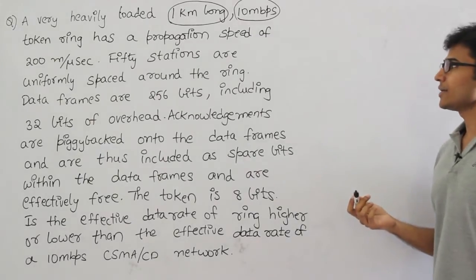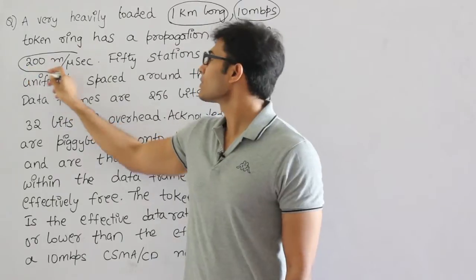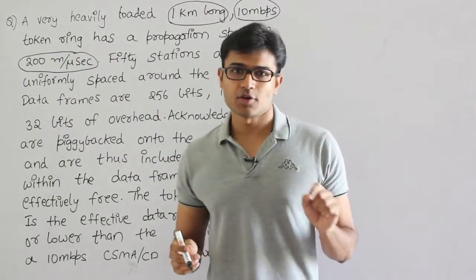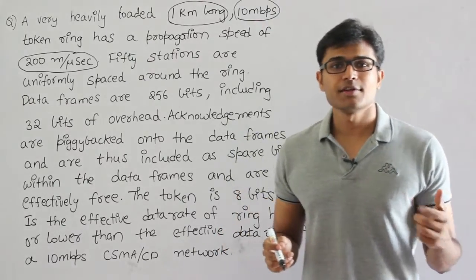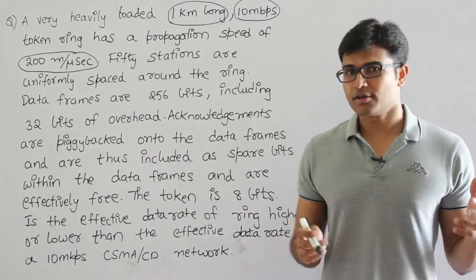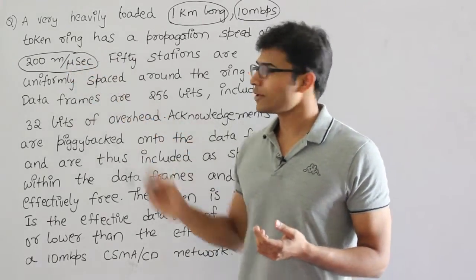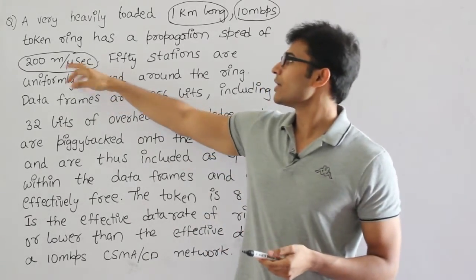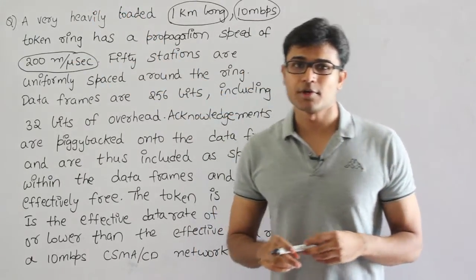Token Ring is used and has a propagation speed given as 200 meters per microsecond. Please look at the units all the time. The speed has to be always meters per second, but sometimes they give it in different units. To convert meters per microsecond into meters per second, take the micro to the numerator and you see it is 2 times 10^8 meters per second.